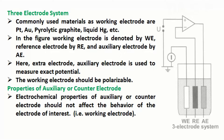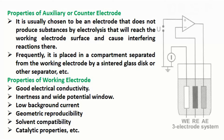Properties of auxiliary or counter-electrode: The electrochemical properties of the auxiliary or counter-electrode should not affect the behavior of the electrode of interest, that is the working electrode. It is usually chosen to be an electrode that does not produce substances by electrolysis that will reach the working electrode surface and cause interfering reactions there.